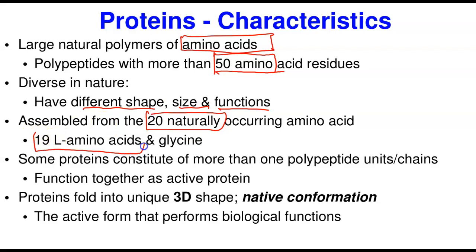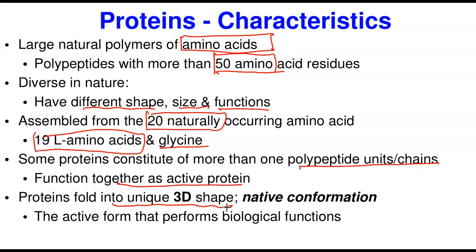Remember, glycine is the only amino acid that does not undergo stereoisomerism because its alpha carbon is not a chiral carbon. Some proteins are built from more than one polypeptide chain or unit, like insulin, which has the alpha chain and the beta chain. Those multiple chains are united in a common function and native structure. Proteins fold into a unique three-dimensional shape — the native conformation — which is the active form that performs the biological function.